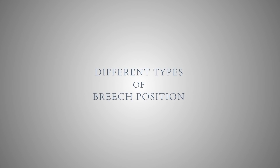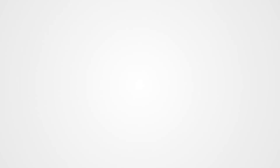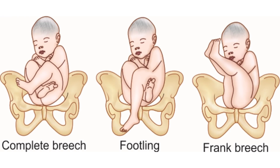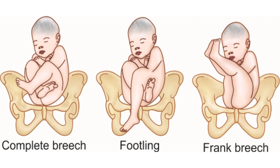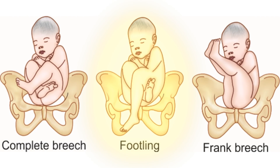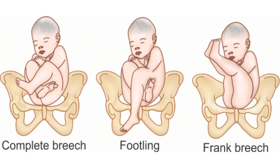In breech presentation, the fetus lies longitudinally with the buttocks presenting in the lower pole of the uterus. The different types are: Frank Breech — buttocks present first with flexed hips and legs extended on the abdomen; Complete Breech — buttocks present first with flexed hips and flexed knees, feet not below the buttocks; Footling Breech — one or both feet present at the birth canal with both hips and knees in extended position.